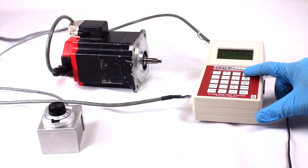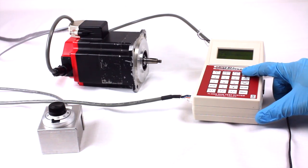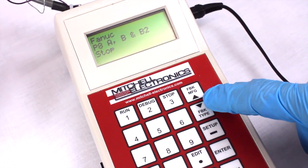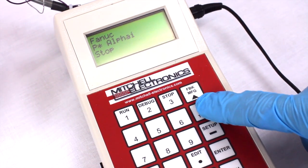Then select the correct feedback type and number of polls using the Feedback Selection button. This is an Alpha-I encoder.